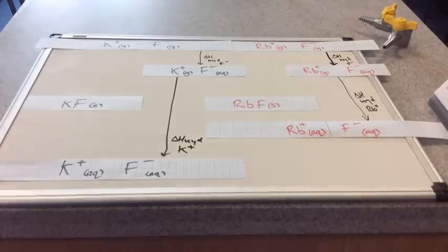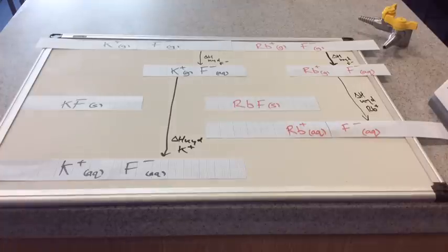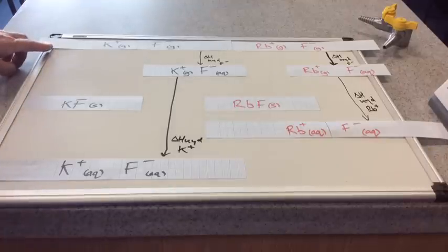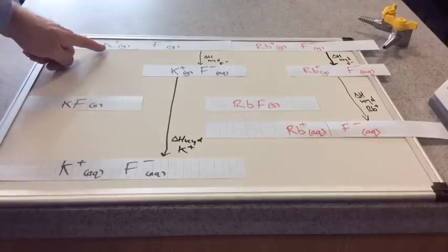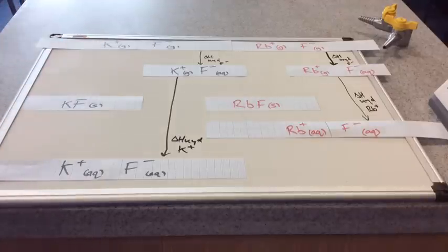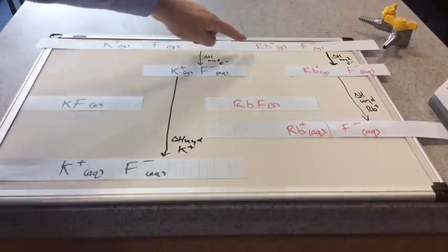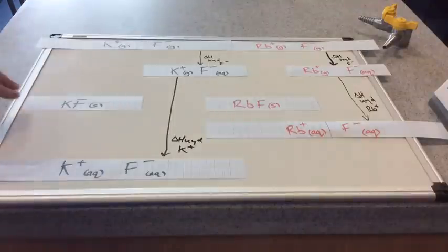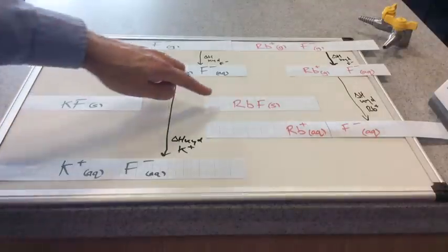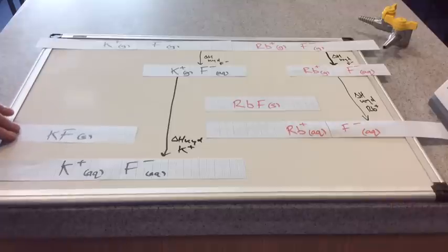Obviously the other enthalpy change that is affected is the lattice enthalpy. The lattice enthalpy of KF, because of the smaller ionic radius of the K+ ion, will be more exothermic than the lattice enthalpy of RbF. So I'll keep that there and shove that down here.